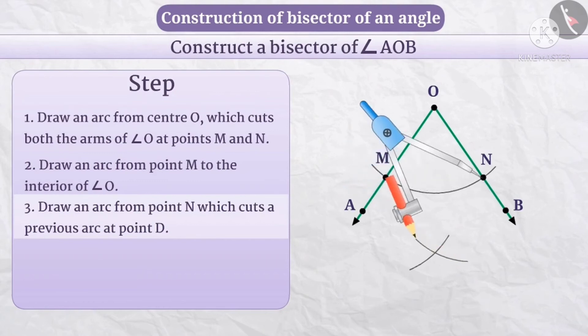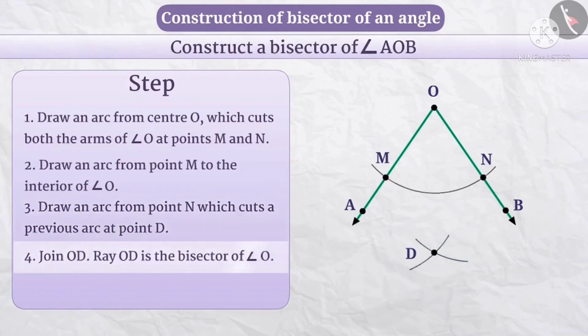Here we get one intersecting point, which we denote as point D. Ray OD is the bisector of the angle.